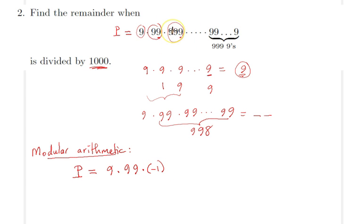Because in mod 1000 that would be negative 1, and the rest of the terms will all be negative 1 all the way to the last term. And how many negative ones do we have? 997 negative ones. 9 times 99 would be, I believe, 891, and then an odd number of negative ones would give you a negative 1.